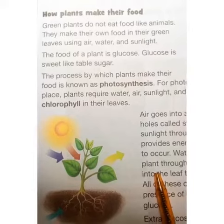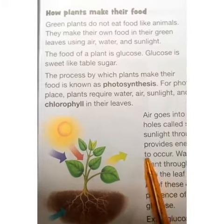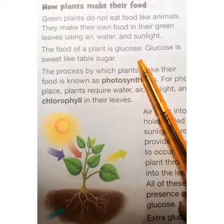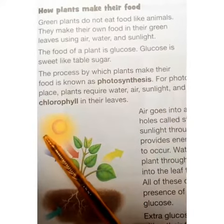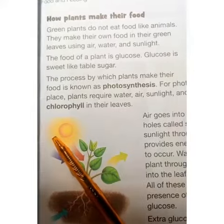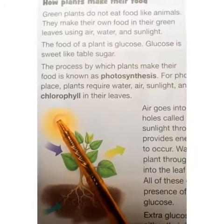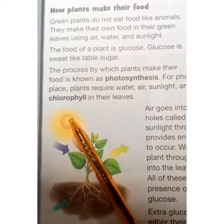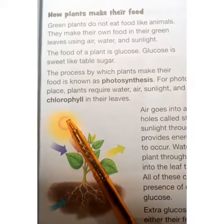The food of a plant is glucose. The process by which plants make their food is known as photosynthesis. ایسا طریقہ کار جس کو استعمال کرتے ہوئے پودے اپنی خوراک بناتے ہیں اس کو photosynthesis کہتے ہیں۔